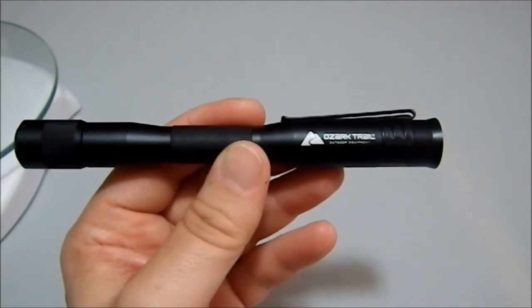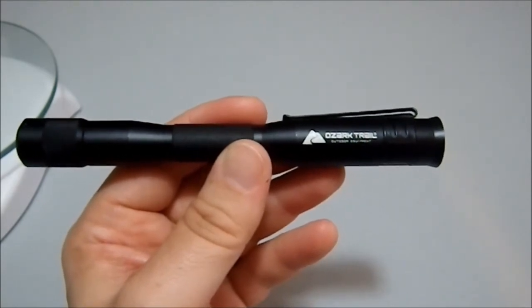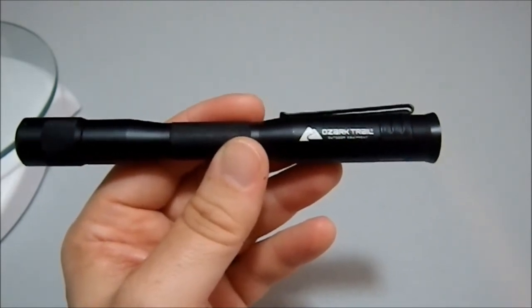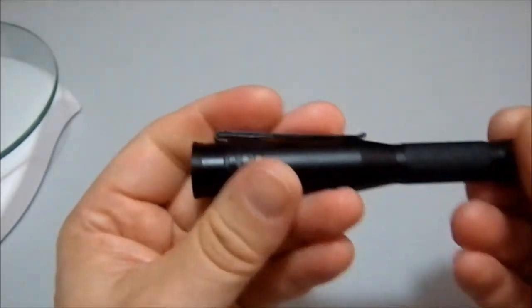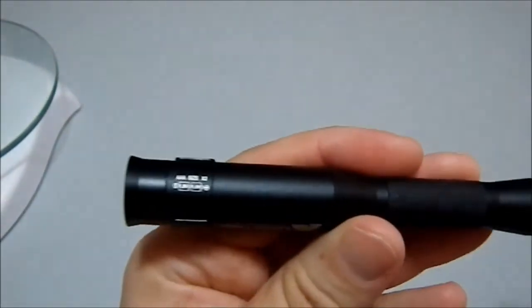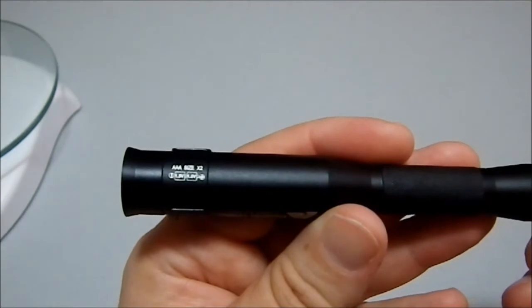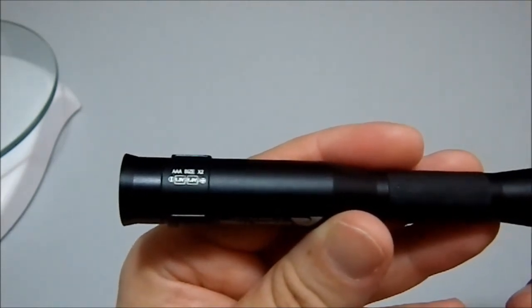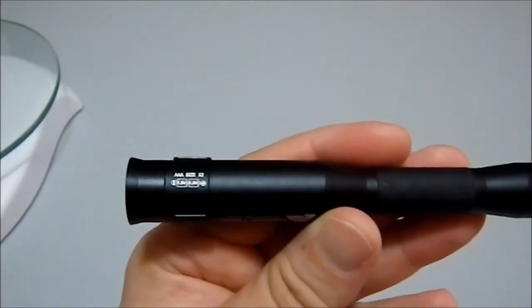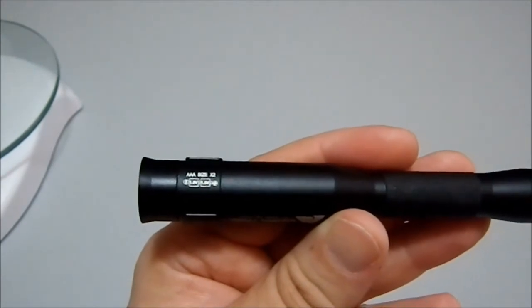I may go out and buy another one of these, just so I have one before they go out of existence. Because I really like this design. Another thing I like about this is that, here it is, this actually tells you AAA times 2, and then it shows you how they go in the flashlight. That is a wonderful feature.